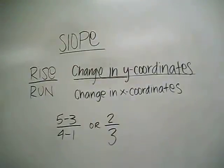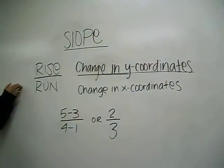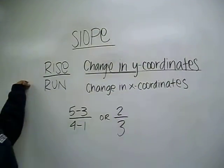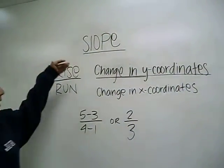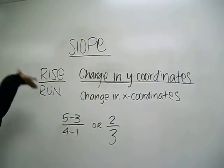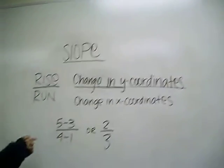And now, on to an example. The slope equals rise over run, which is the change in the y-coordinate over the change in the x-coordinate.